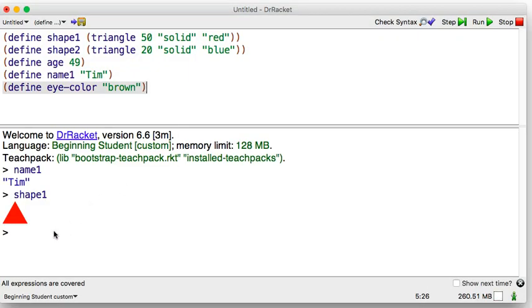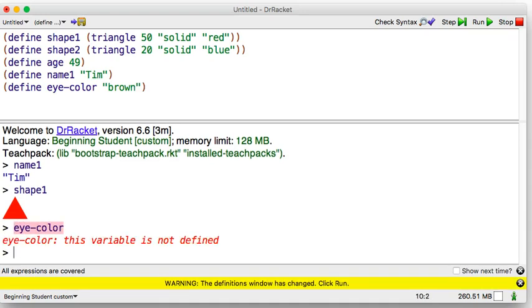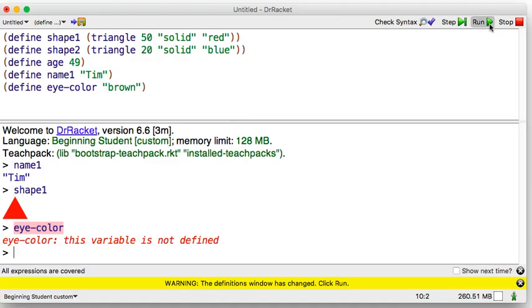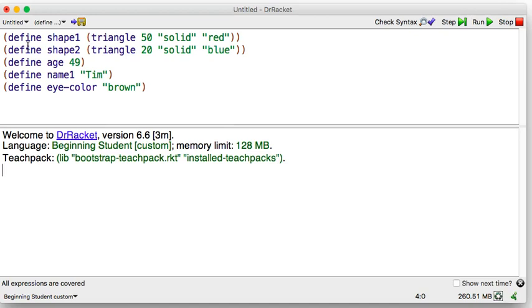Now I'm going to go down here and evaluate eye color. That variable is not defined. Even though I wrote it up here, it's not defined because I haven't hit Run yet. Now it's hit Run. Just like it told us, it's going to re-evaluate everything up here, so all of these definitions are now added to our language that we can use down here. And I should be able to say eye color.